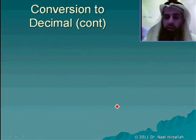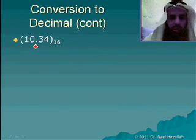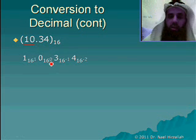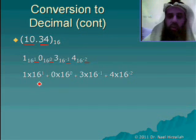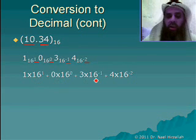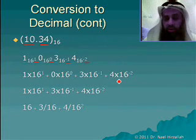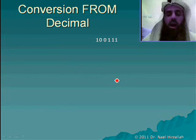As another example, in hexadecimal, suppose we have the number 10.34 and want to convert it to decimal. The digits to the left of the decimal point use positive powers: 16 to the power of 0 and 16 to the power of 1. Digits to the right take negative powers. This comes down to: 1 times 16 to the power of 1, plus 3 times 16 to the power of minus 1, plus 4 times 16 to the power of minus 2. Now let's look at converting from decimal.